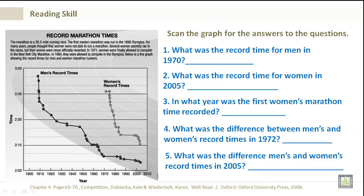What was the record time for men in 1970? Let's scan the graph. That would be 2 minutes and 8 seconds. We can look at 1970 and correlate that to this point on the chart — approximately 2 minutes and 8 seconds. What was the record time for women in 2005? We have approximately 2 minutes and 15 seconds.